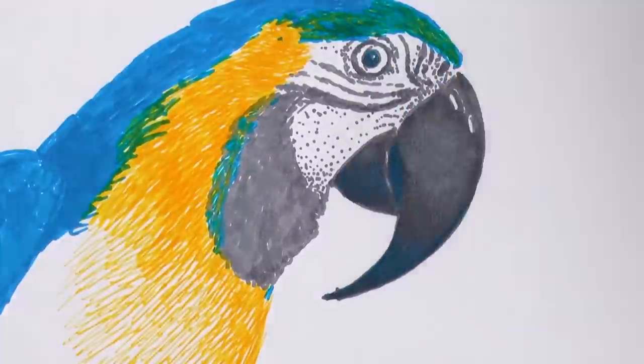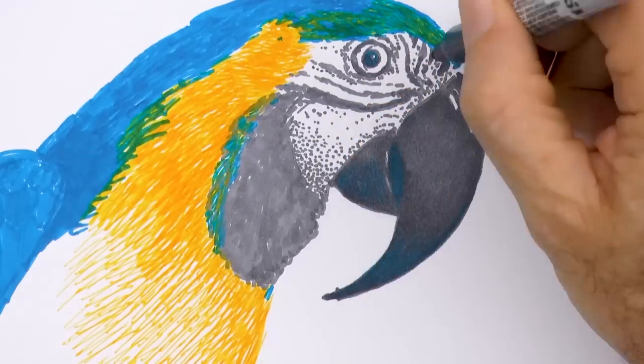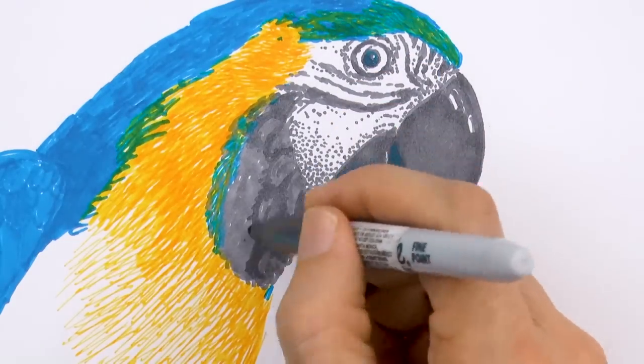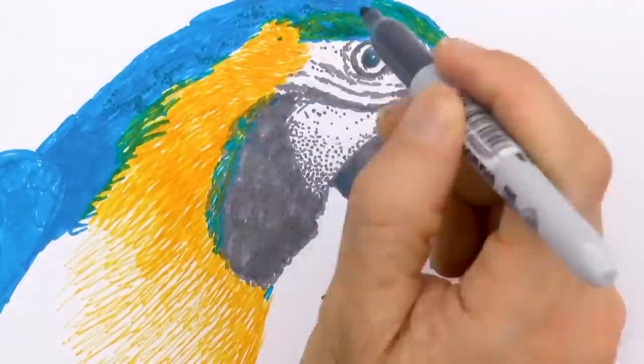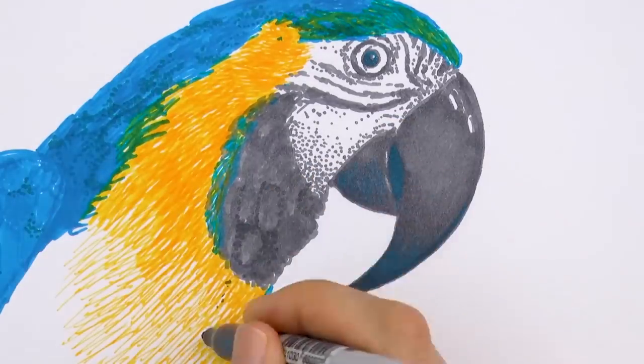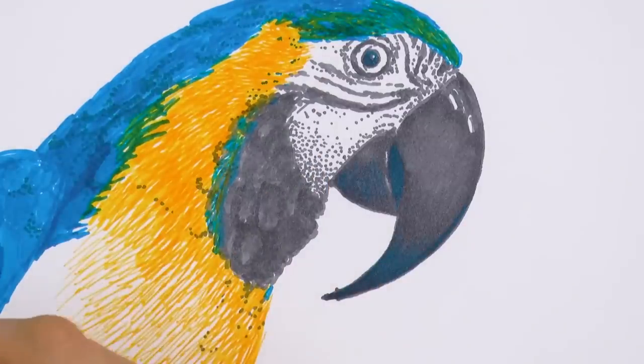And I'll go over the beak with this, and then over to the areas that I already drew, trying to create the feathers shape or the feathers feeling. Although this is hard with these markers, that's the big challenge!